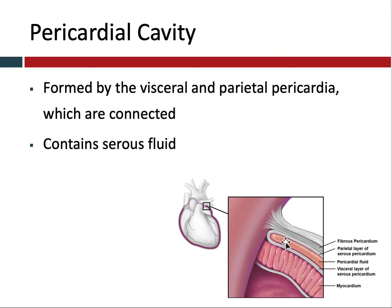That open space is called the pericardial cavity, and the fluid that is in between those two layers is going to reduce the friction between the heart and the fibrous pericardium and all the other surrounding organs as the heart beats. As it beats it moves around, and without that layer of fluid it would have a lot of friction, which would not be good for the heart itself. So that is the pericardium.